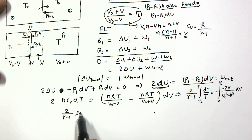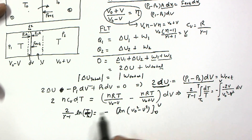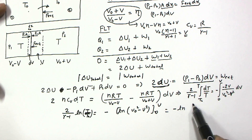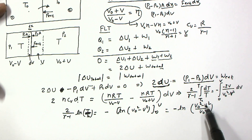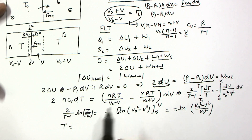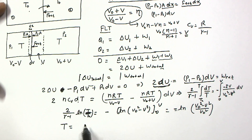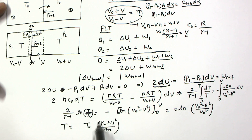After putting in the limits and substituting V = V0·(η−1)/(η+1), the final result is obtained. The integration gives [2/(γ−1)]·ln(T/T0) = ln[V0²/(V0²−V²)], and after substituting for V and simplifying, the temperature as a function of eta comes out as T = T0·[(η+1)²/(4η)]^((γ−1)/2).